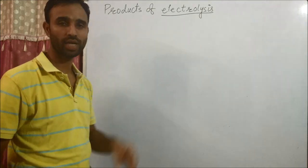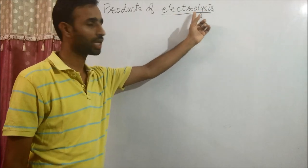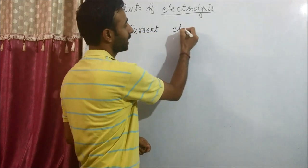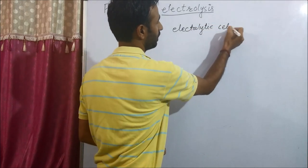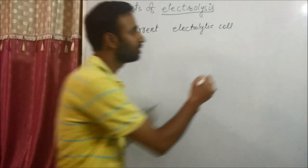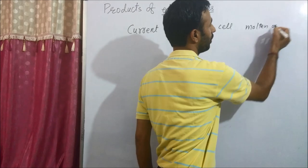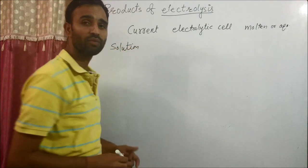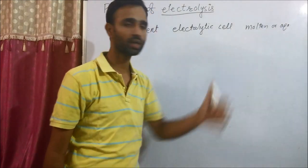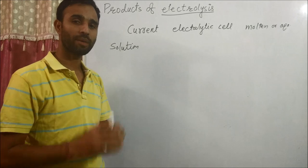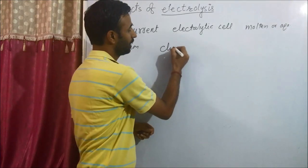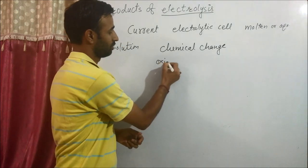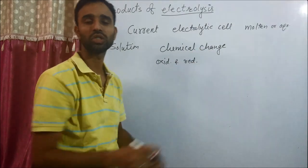Today's topic is products of electrolysis. What is electrolysis? Electrolysis is a phenomenon in which current is passed through an electrolytic cell containing molten or aqueous solution. When this current is passed through an electrolytic cell containing molten or aqueous solution, it brings in chemical change by oxidation and reduction. This phenomenon is known as electrolysis.